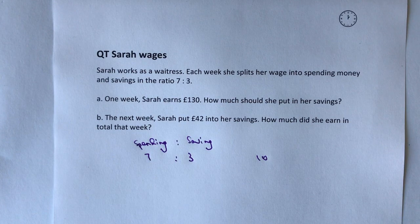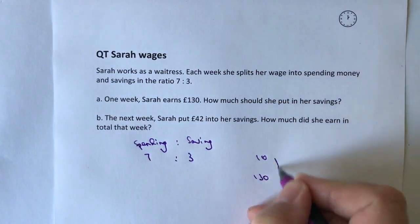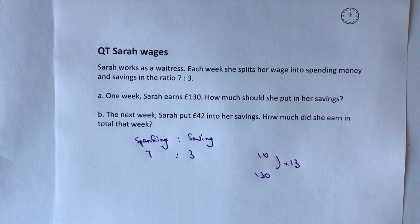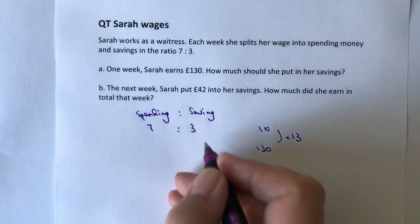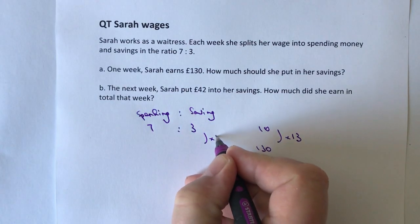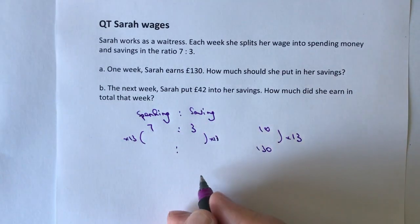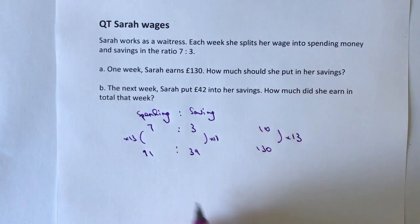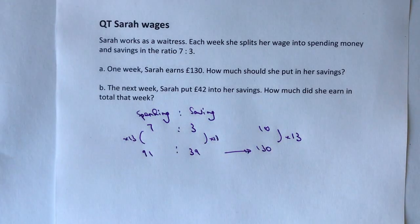But actually on this particular week she earns a hundred and thirty pounds. So if she earns a hundred and thirty pounds, she earned thirteen times more than the ten pounds we first looked at. So if it's thirteen times more, we need to multiply the other two as well — multiply seven by thirteen and three by thirteen. Three times thirteen is thirty-nine and seven times thirteen is ninety-one, and ninety-one plus thirty-nine equals a hundred and thirty.